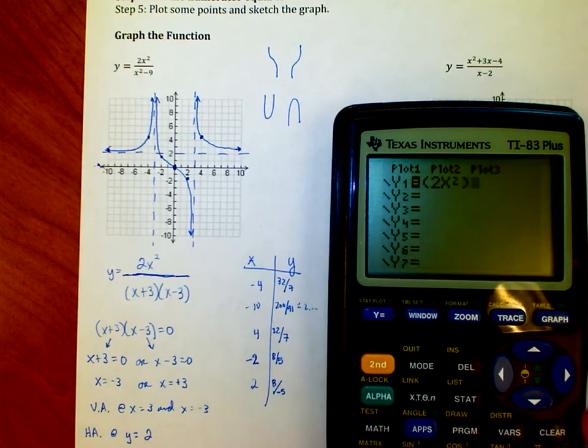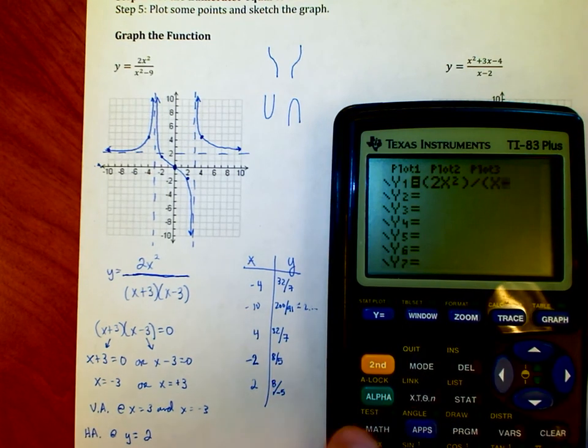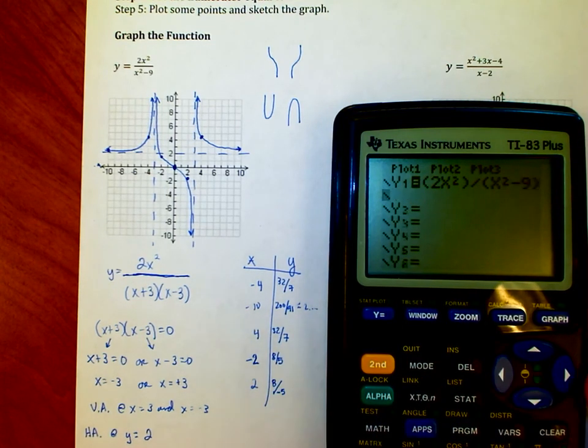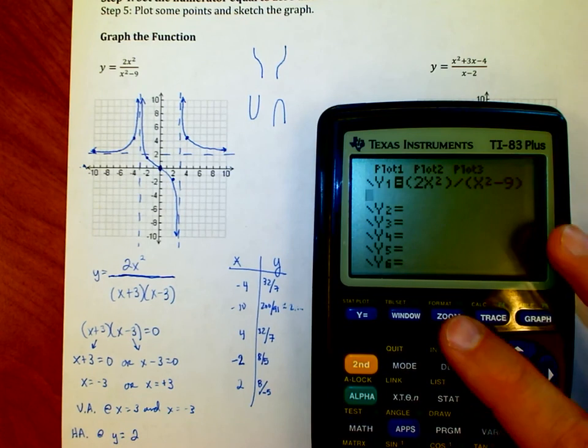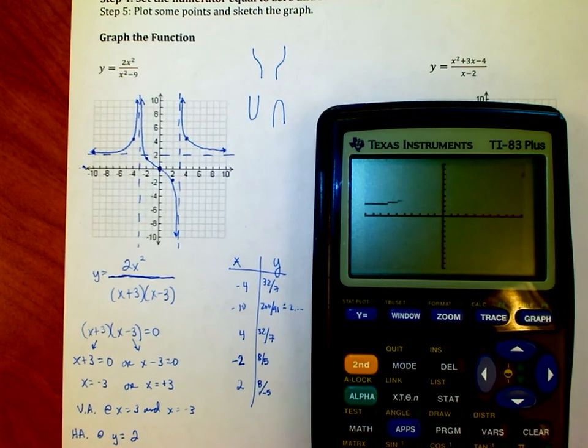2x² on top divided by, notice my use of parentheses, x² minus 9 on the bottom. And when I graph that out, I want you to see how it looks.